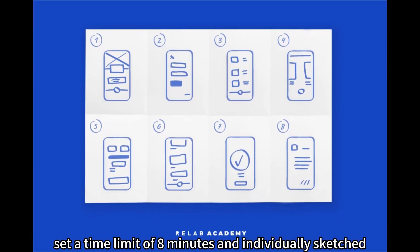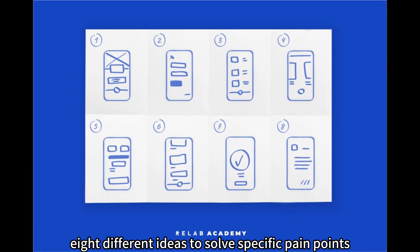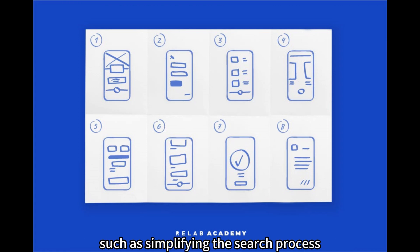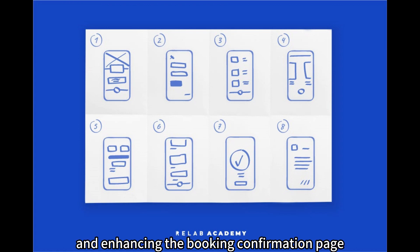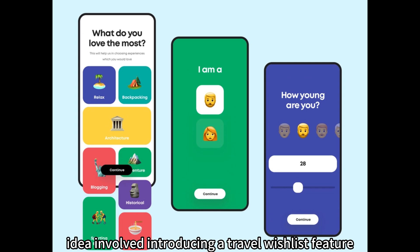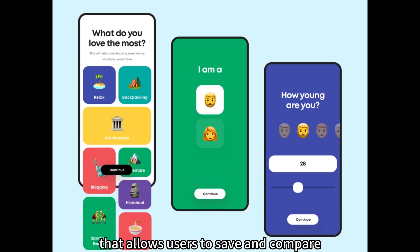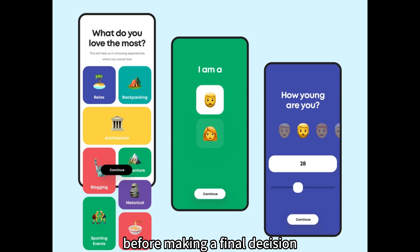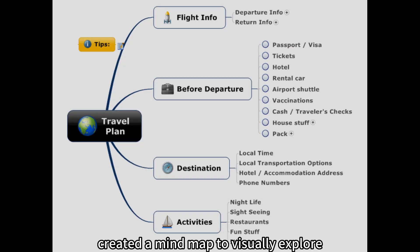Crazy Eights: set a time limit of eight minutes and individually sketched eight different ideas to solve specific pain points, such as simplifying the search process, improving filtering options, and enhancing the booking confirmation page. One idea involved introducing a travel wishlist feature that allows users to save and compare multiple destinations and itineraries before making a final decision.